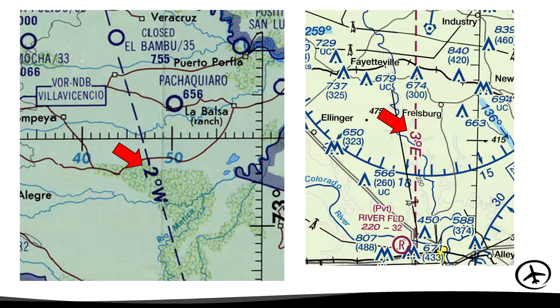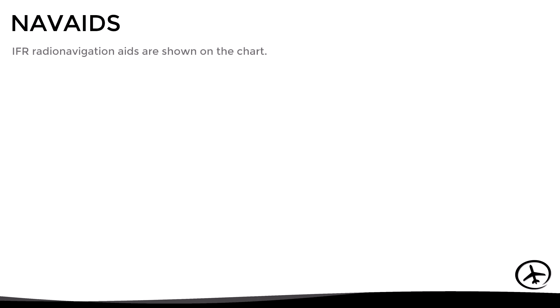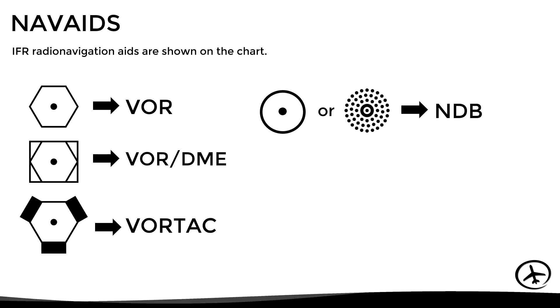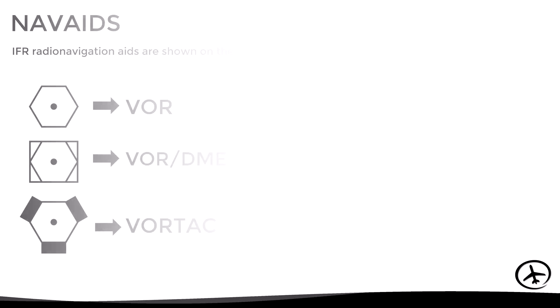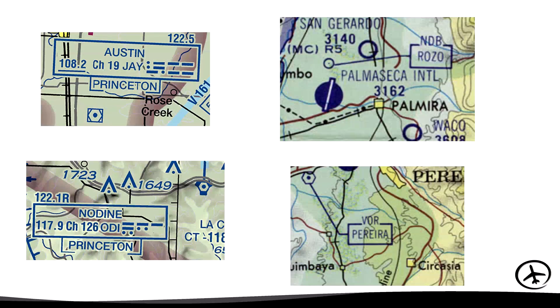Although VFR navigation is not entirely based on the use of radio navaids, they can certainly be used as a reference to verify the position of the aircraft. The charts also show navaids such as VORs, DMEs, VORTACs, and NDBs with their corresponding names, frequencies, and any other additional information.